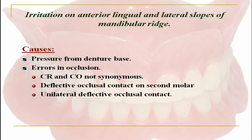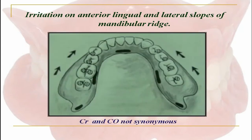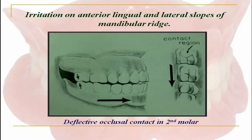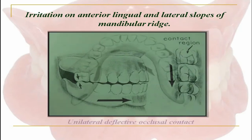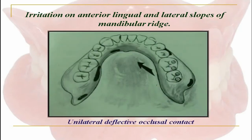Regarding irritation on anterior lingual and lateral slopes of the mandibular ridge, the cause is pressure from the denture base, and errors in occlusion where centric relation and centric occlusion do not coincide. There could be deflective occlusal contact on the second molar, or unilateral deflective occlusal contacts. When there is irritation on the anterior lingual and lateral slopes of the mandibular ridge, the centric relation and centric occlusion not coinciding and deflective occlusal contact in the second molar region may be present.